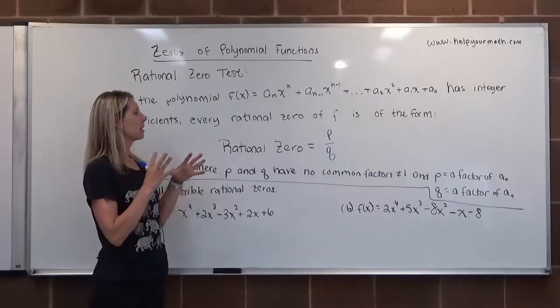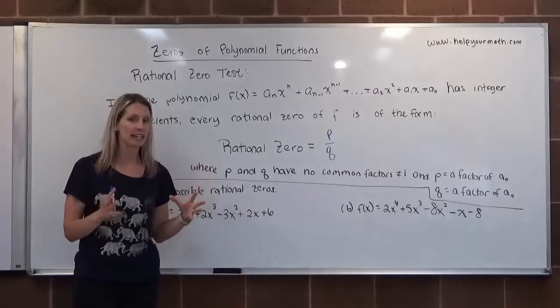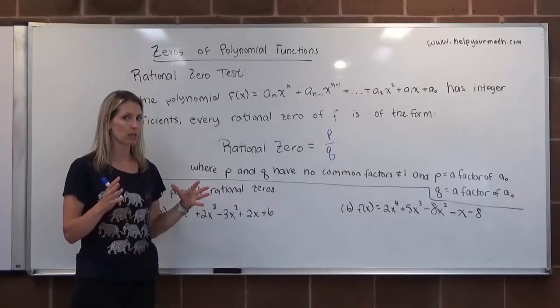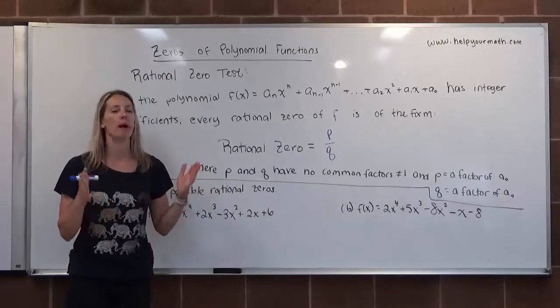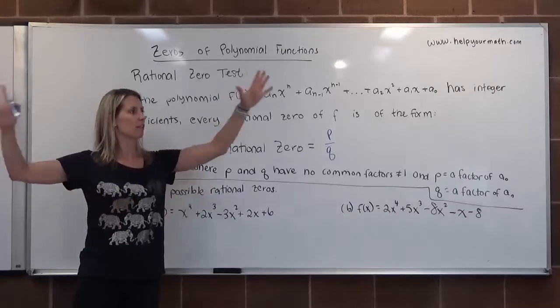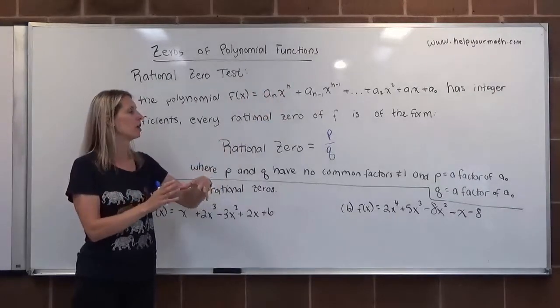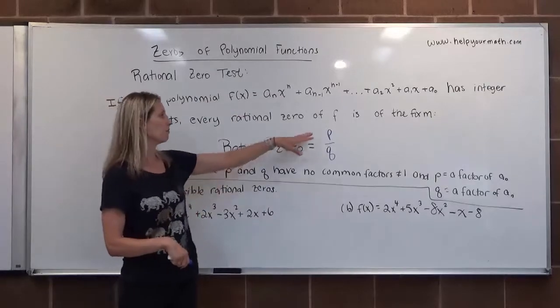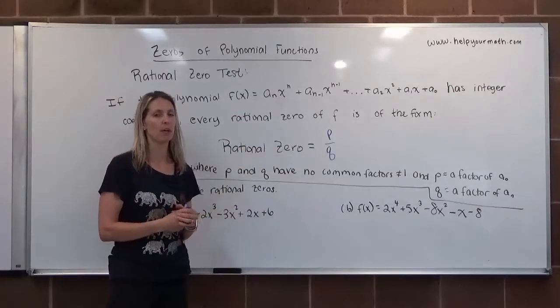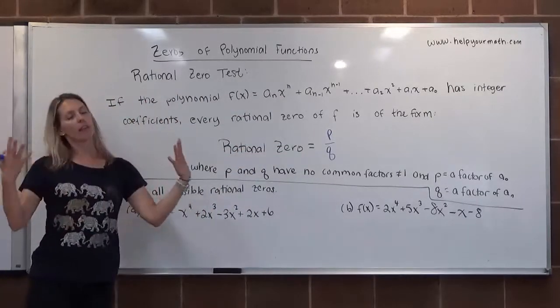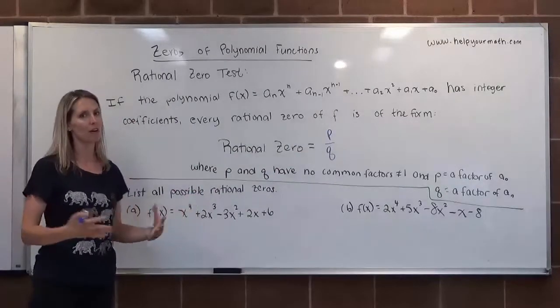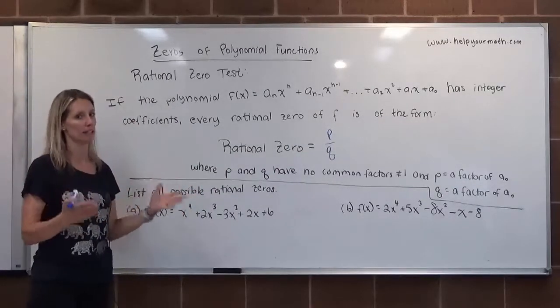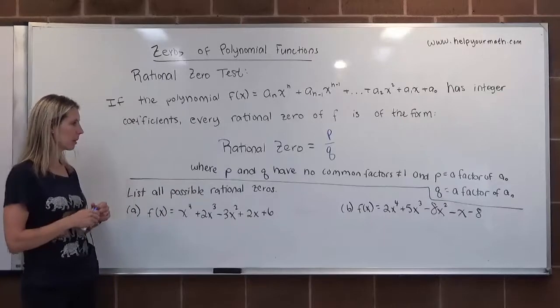So that just tells us if there are any rational roots, those are the only possibilities. So we have infinitely many numbers. We're going to whittle it down to the select few of the form P over Q. That doesn't guarantee that they are all going to be 0s. Those are just the only possible rational roots.